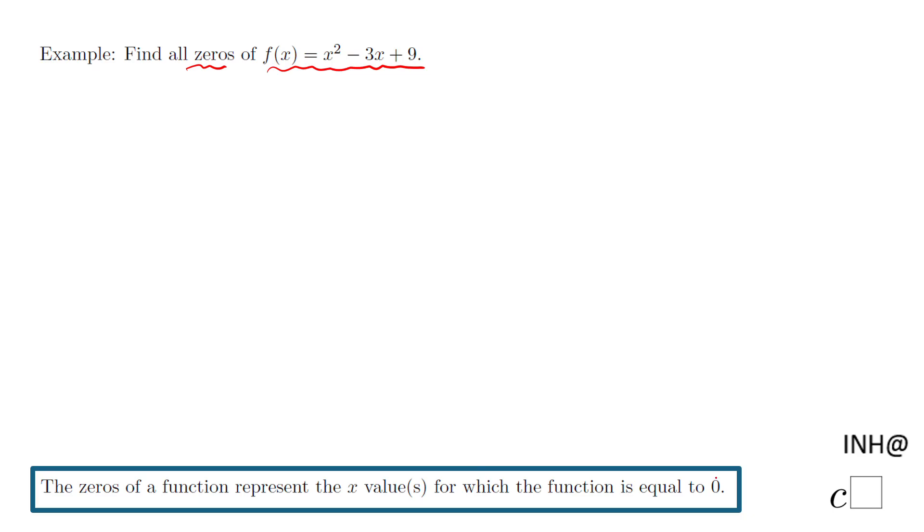I said here down on the bottom of the screen that in order to find the zero of any function, you need to set up that function equal to zero. Make the function equal to zero. In this case, we have this quadratic equation: x² - 3x + 9 = 0.